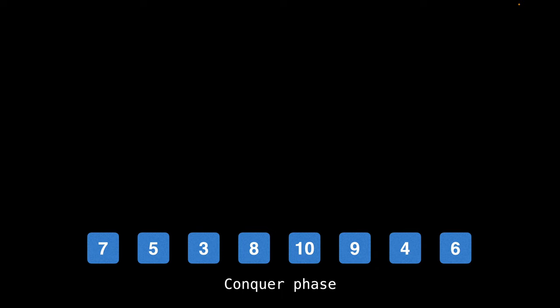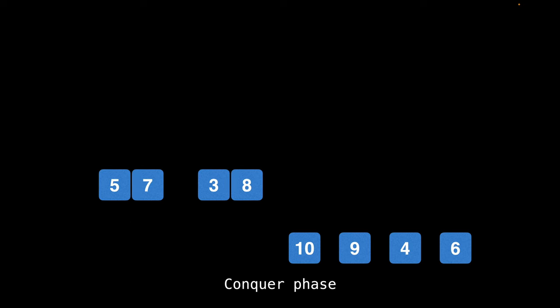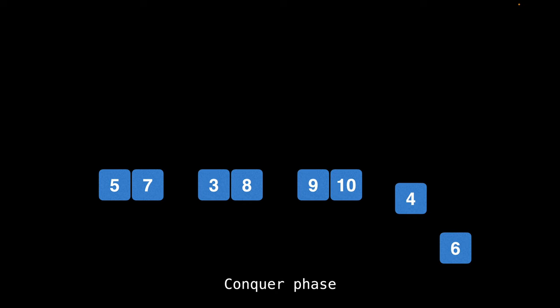And then we go into the conquer phase. This is where we merge together the lists on the way back up. In the beginning, the lists consist of just individual elements that are being merged back together into lists containing two sorted values. What you'll then notice is that the two lists that we merged together on the way up are themselves already sorted. This is key because it is what allows us to merge the list together efficiently.